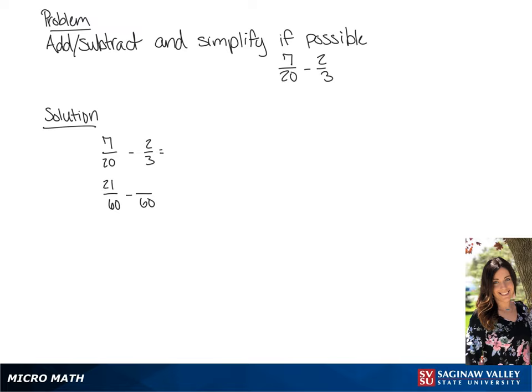giving us 21 over 60 minus 40 over 60. So we have a final answer of negative 19 over 60.